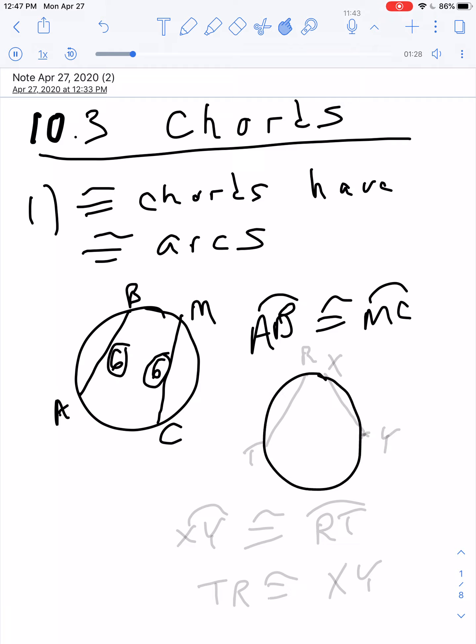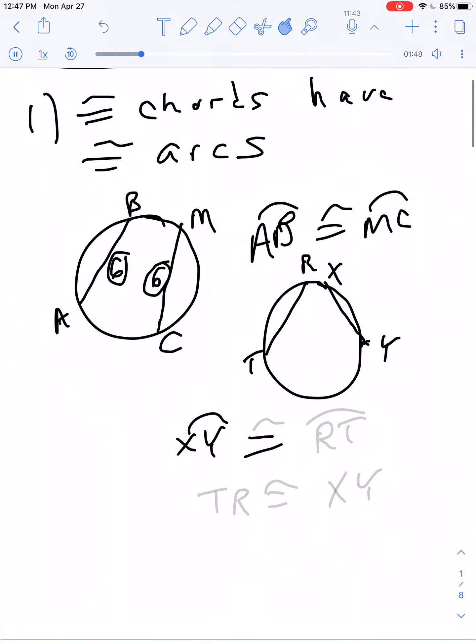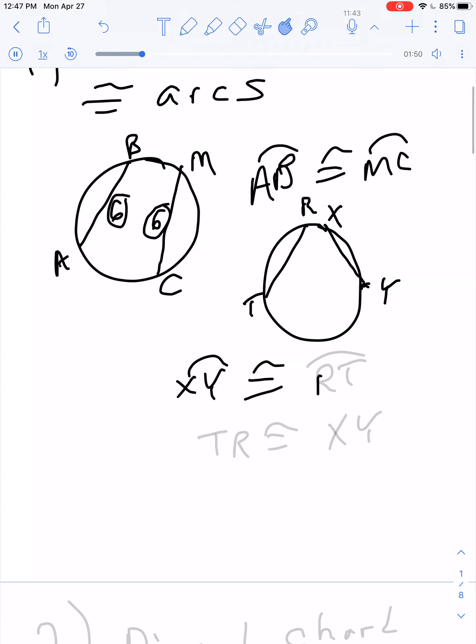What I mean by vice versa is this. If we have arc XY connected here, and down over here we have arc RT, if arc XY is congruent to arc RT, then segment or chord TR is also congruent to arc XY. So congruent chords have congruent arcs.